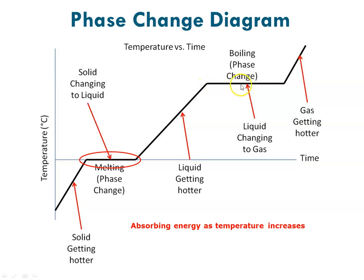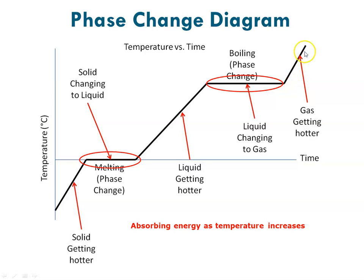At that boiling point, you'll notice the diagram becomes flat again. That's because the energy being absorbed is causing the liquid molecules to escape their attraction from one another and go from liquid to gas. The temperature remains constant until every last bit of liquid is converted to gas, and then at that point, as it's absorbing energy, there is an increase in temperature.